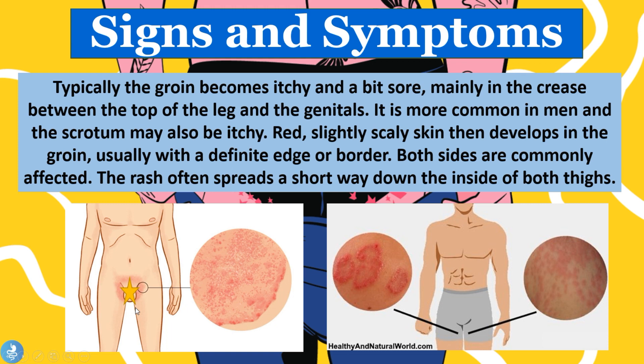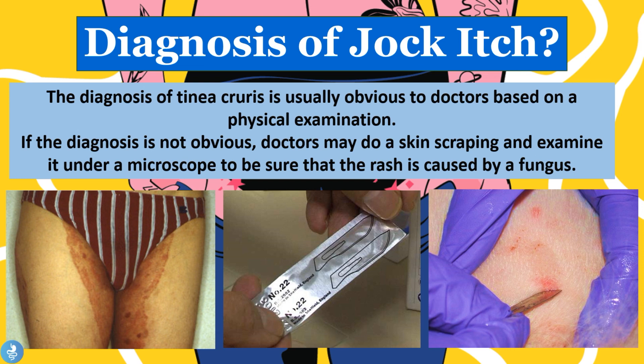The diagnosis of jock itch: the diagnosis of tinea cruris is usually obvious to doctors based on physical examination. If the diagnosis is not obvious, doctors may do a skin scraping and examine it under a microscope to confirm that the rash is caused by a fungus. The typical appearance of the rash is usually a dead giveaway, but in some cases, if we want to accurately confirm the diagnosis, we can do a skin scraping test where little bits of the rash are scraped and sent to a lab for microscopic examination to identify the specific fungi.